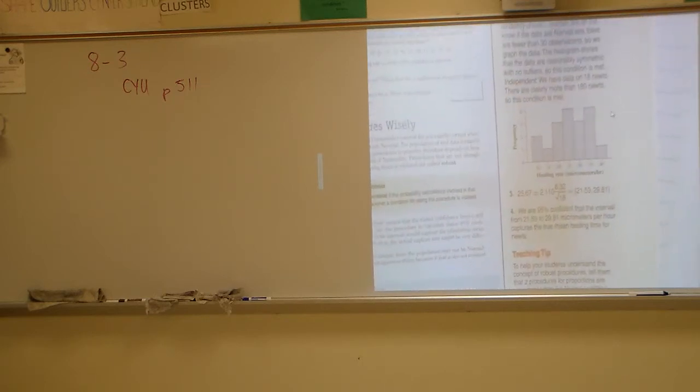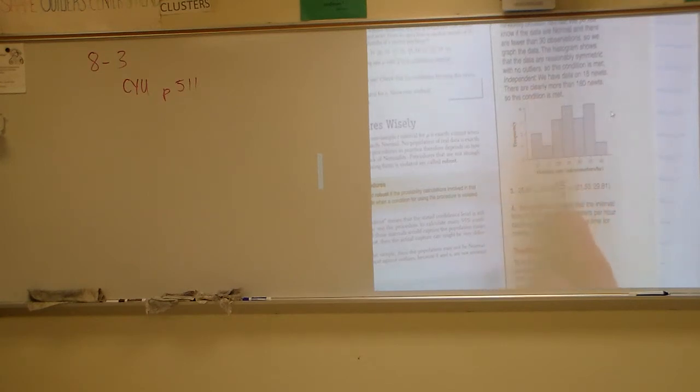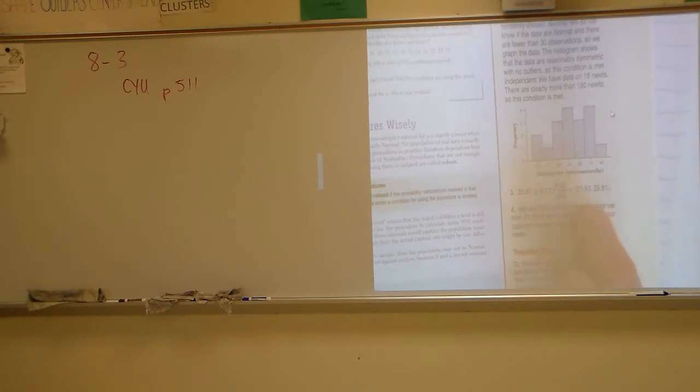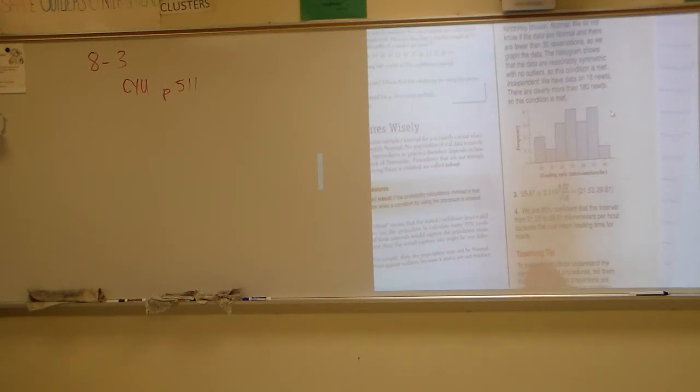Here is the do part. Your mean, 25.67 plus or minus 2.11 times 8.32 divided by the square root of 18 gives you an interval of 21.53 to 29.81. We are 95% confident that the interval from 21.53 to 29.81 micrometers per hour captures the true mean healing rate for newts.